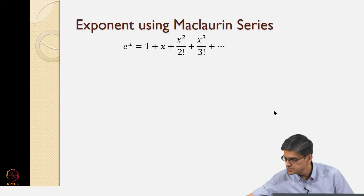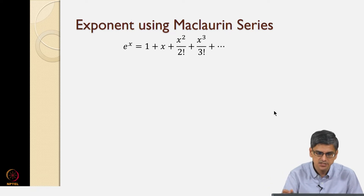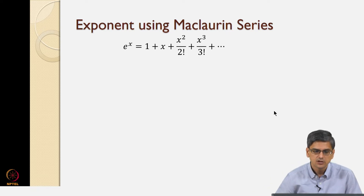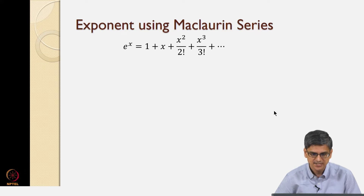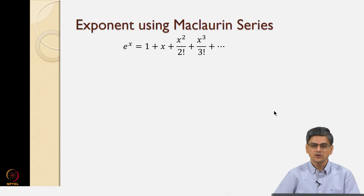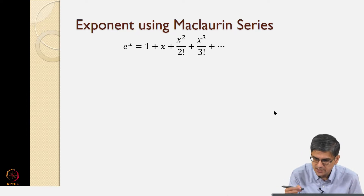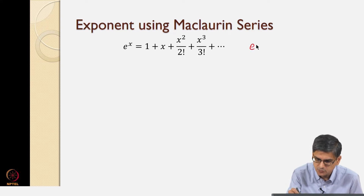Now what is the Maclaurin series for e to the power x? The Maclaurin series is given here: e to the power x is equal to 1 plus x plus x squared by 2 factorial plus x to the power 3 by 3 factorial, and so on and so forth. What we are going to do is use this Maclaurin series to find e to the power 0.5.